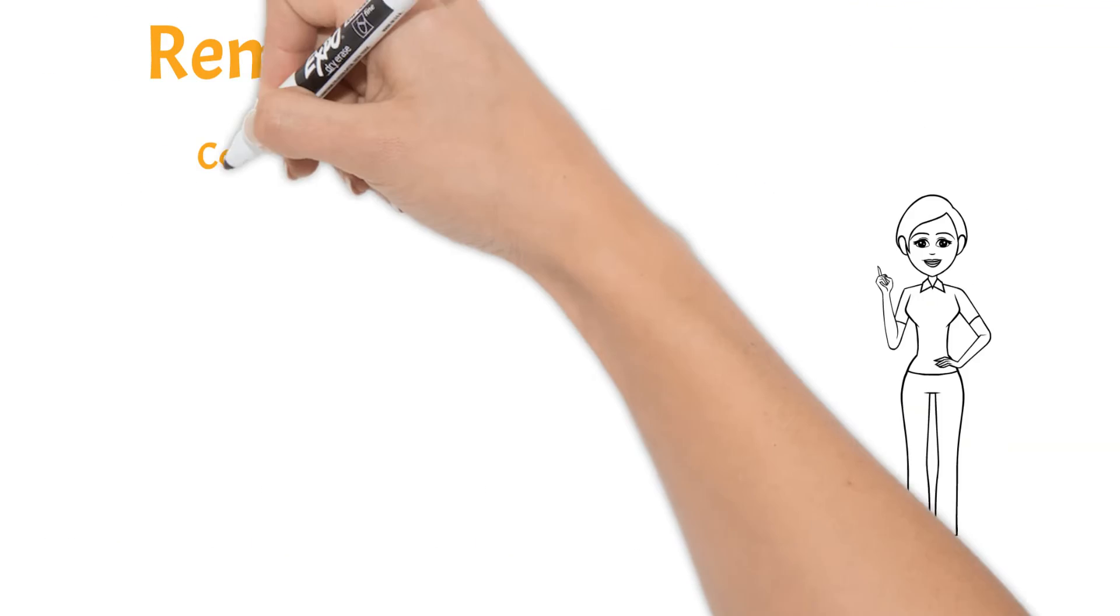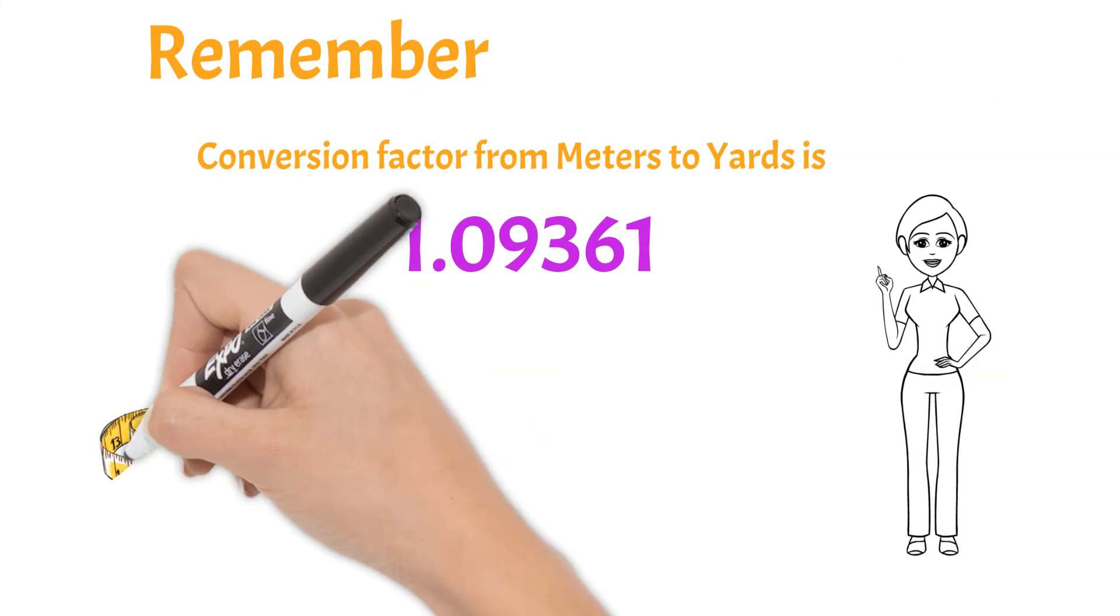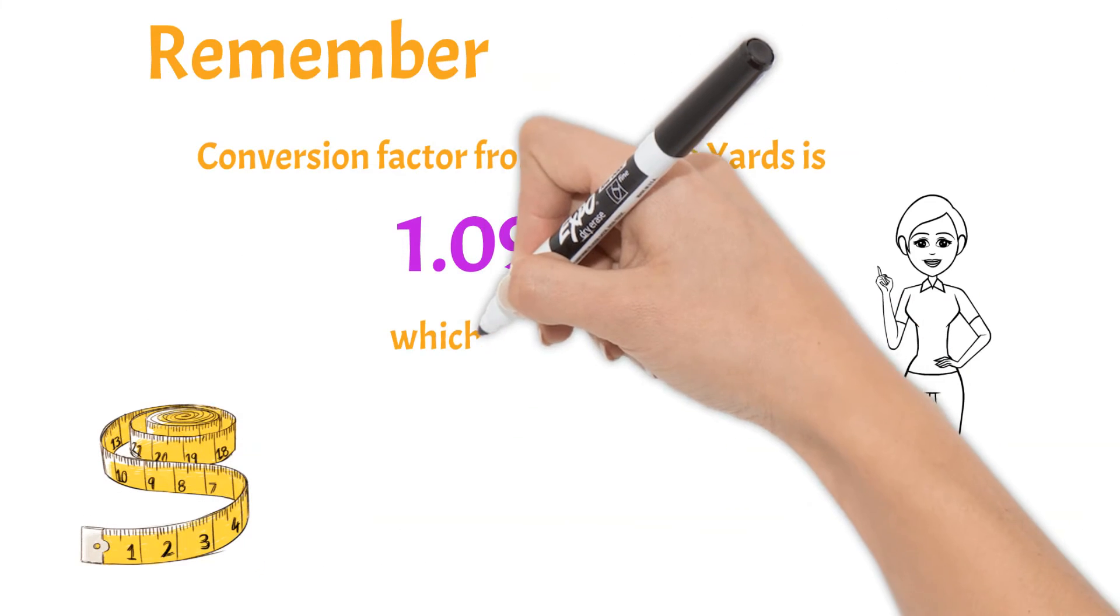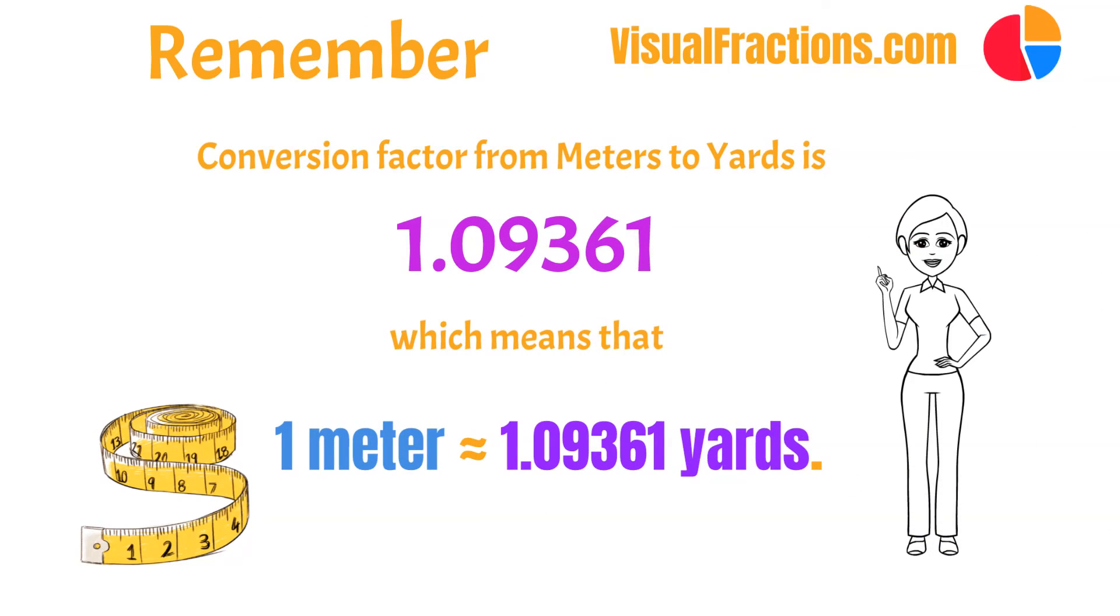Remember, the conversion factor you need is 1.09361. With this in mind, you can convert any measurement from meters to yards quickly and accurately. Did you find this conversion guide helpful?